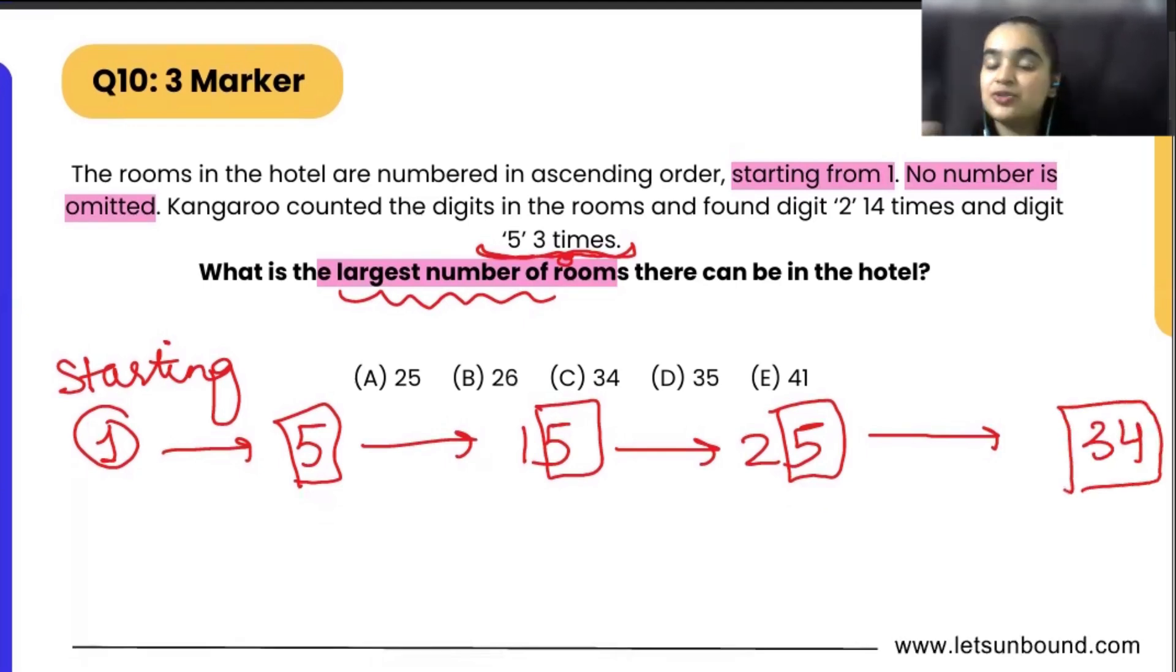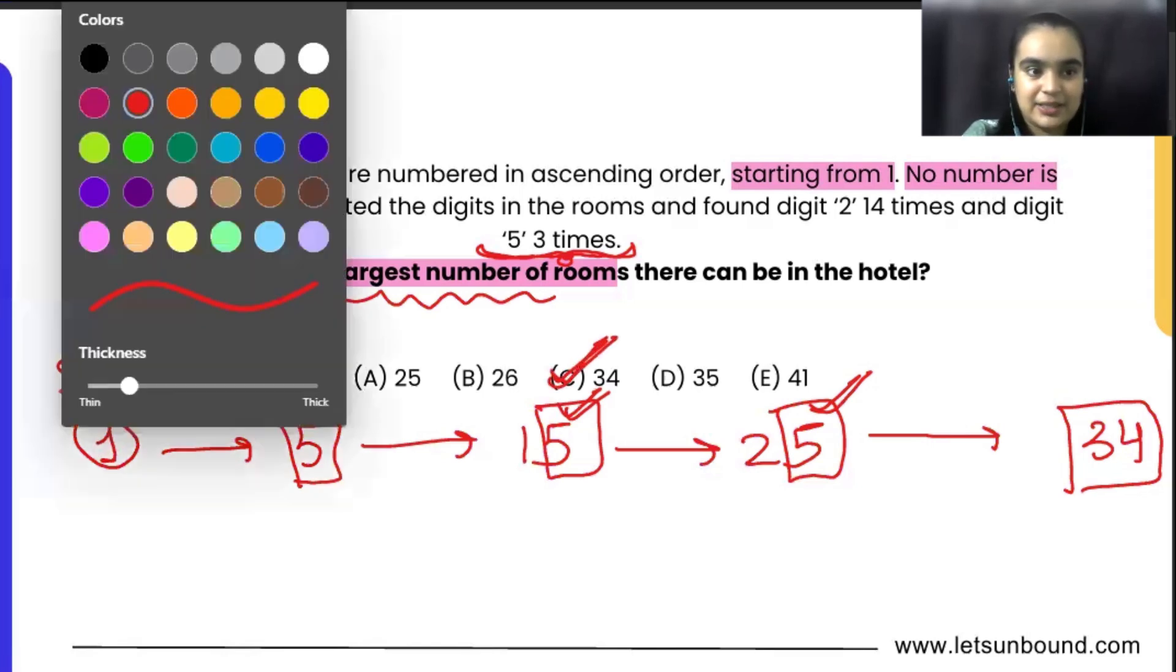We cannot go to 35 because if we go to 35 there will be 4 fives which will occur, but we can say that there are 34 rooms. That's how we satisfied the condition. So the correct answer is option C. But you can check if you are having time in your exam, you can check.